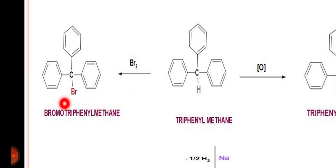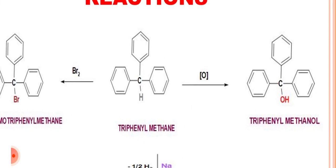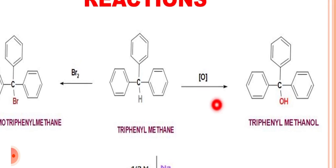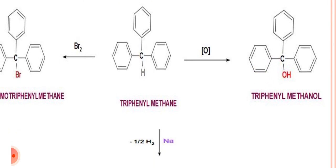Bromination in the presence of ultraviolet light leads to the formation of bromotriphenylmethane. Triphenylmethane also undergoes oxidation on the benzylic carbon to afford triphenylmethanol.